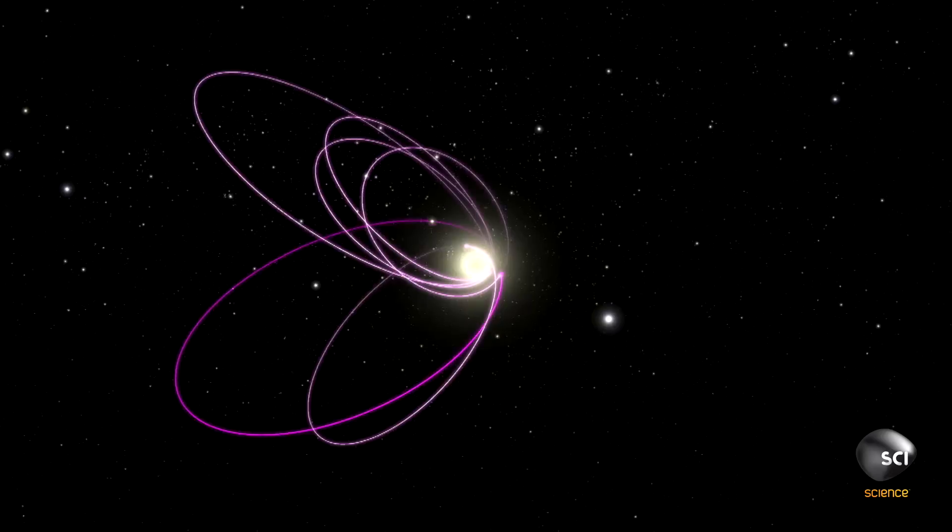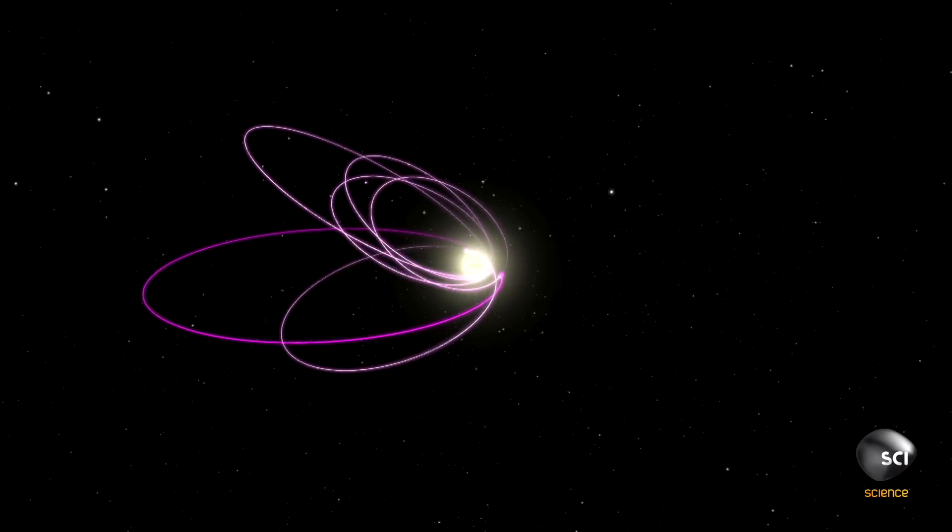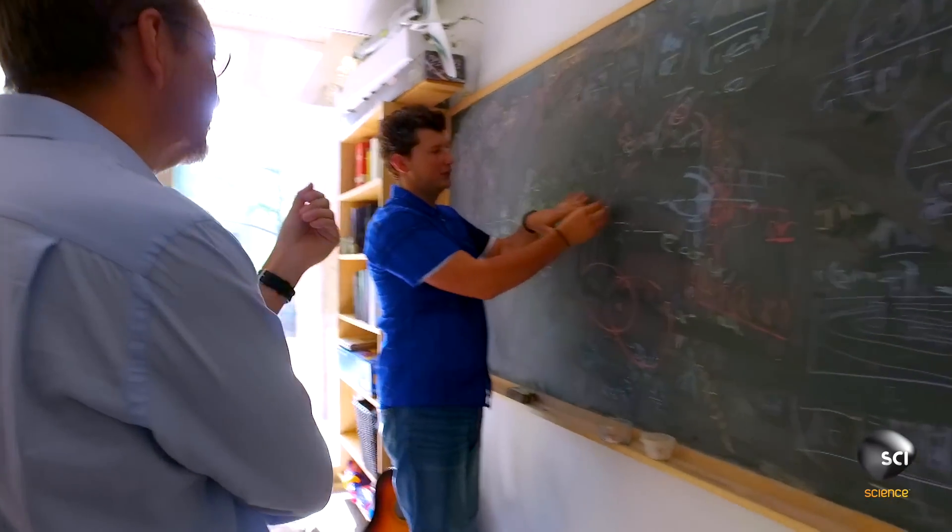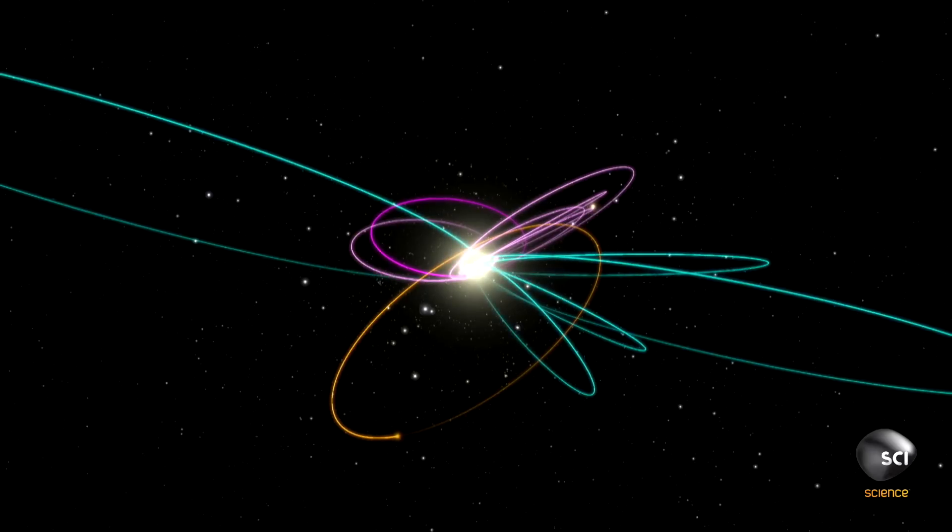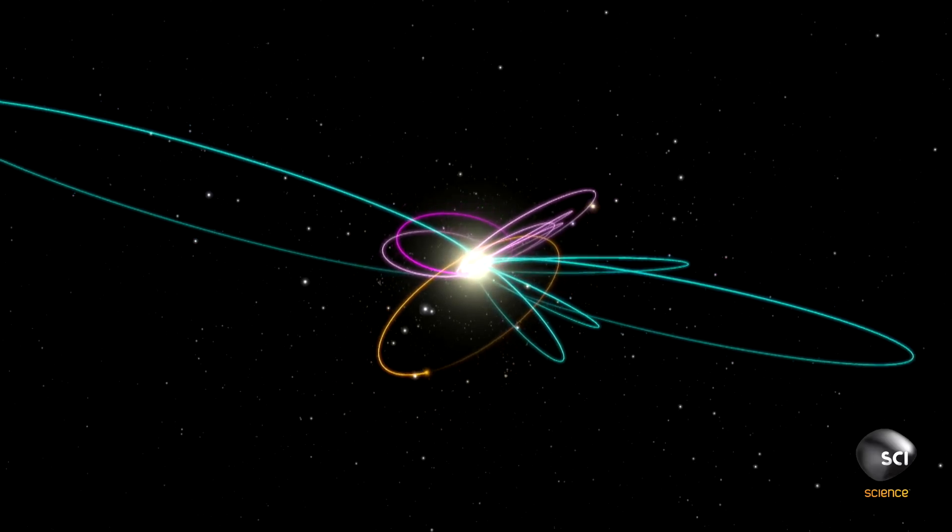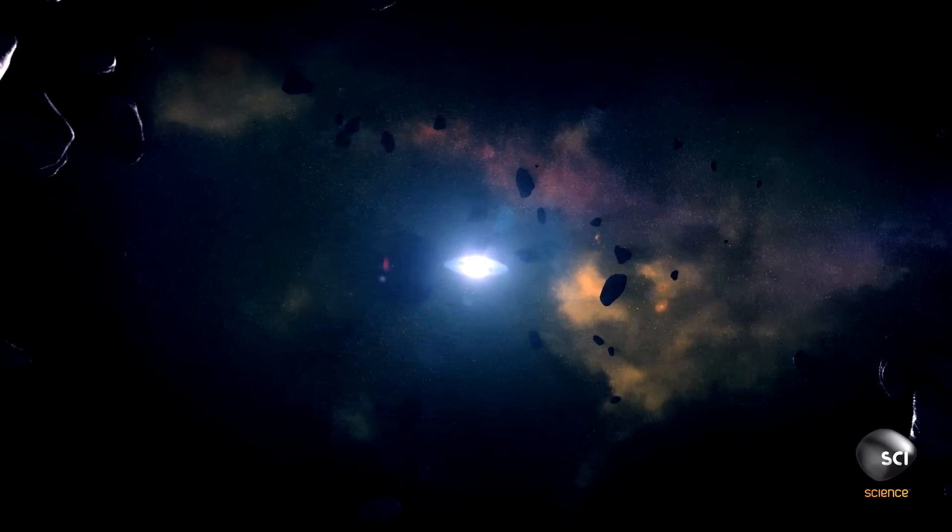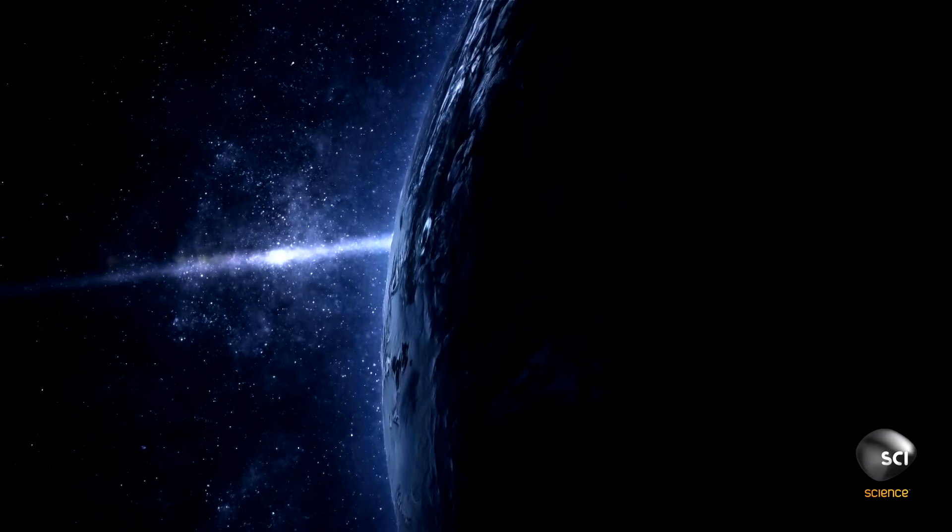Stunningly, the simulation predicts elongated orbits identical to the ones already observed. But the simulation also spits out a surprise. There should be a second set of rogue orbits that are perpendicular to the first set. If Mike can locate these weird predicted objects inside the Kuiper Belt, Planet Nine is almost certainly real.